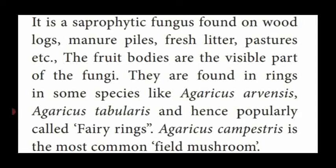The fruit bodies are the visible part of the fungi. We can see an umbrella-like structure which is white in colour, appearing at the time of the rainy season. That structure is the fruiting body — the reproductive structure which produces spores. We see this umbrella-shaped structure during rainy season; it is named the fruiting body of Agaricus. These fruiting bodies are found in the form of ring-like structures.